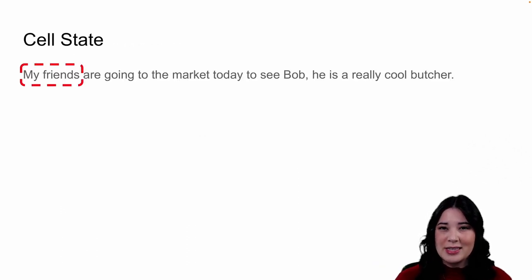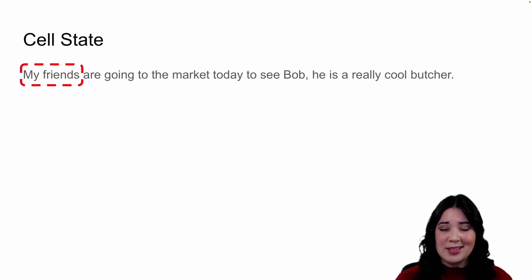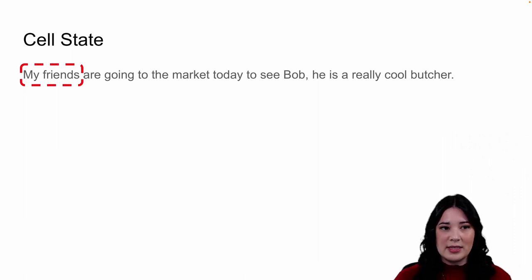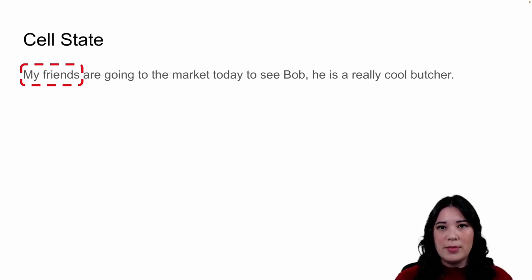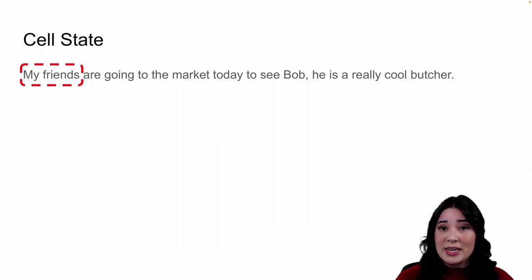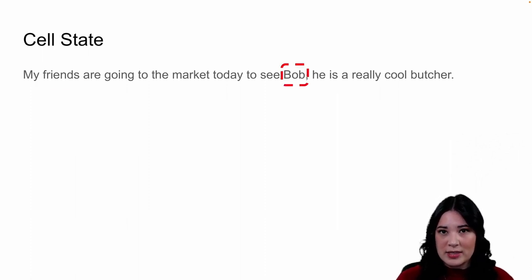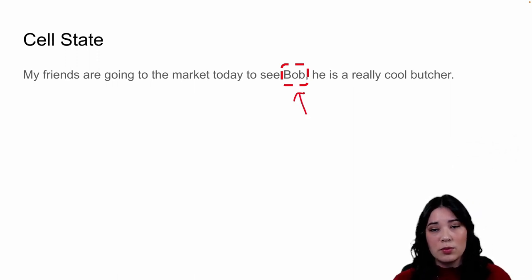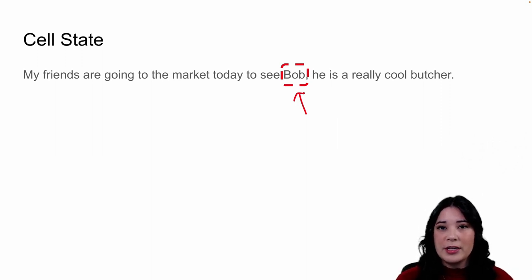In a recurrent architecture, the idea of residual connections takes the form of something called a cell state, which is essentially like a long-term memory. This can be especially useful when processing sequences. For instance, take this sentence: 'My friends are going to the market today to see Bob — he is a really cool butcher.' A long-term memory could help you remember important things like the subject of a sentence. At the beginning, the subject is 'my friends,' but then as we move through the sentence the subject updates to 'Bob.' This long-term memory helps preserve and record information over time.